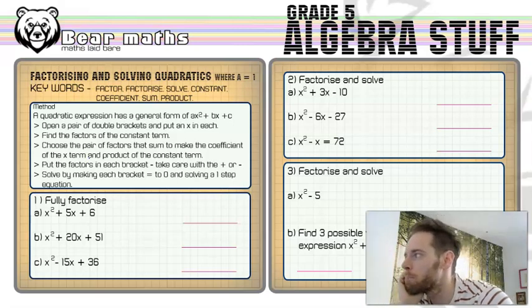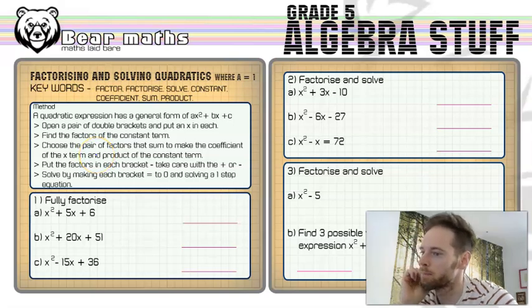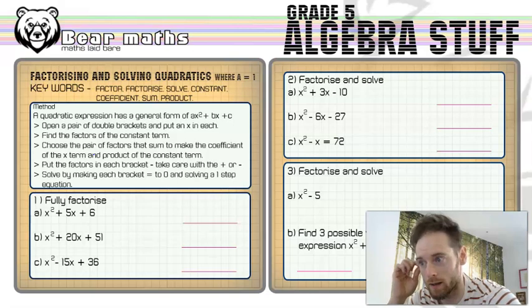Now the keywords here are factor, factorise, solve, constant, coefficient, sum and product. Lots of words. A factor is a number that fits into a given number. They are in pairs.